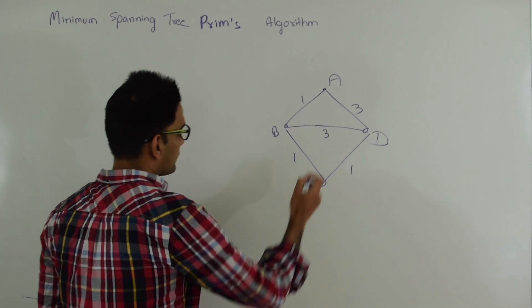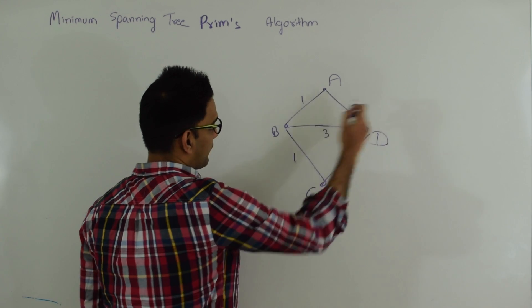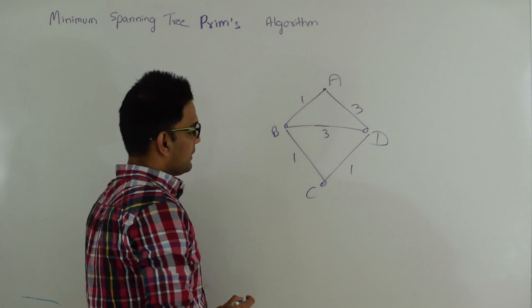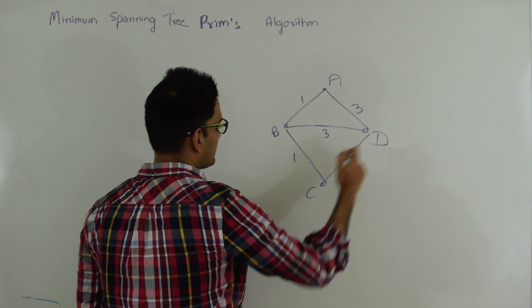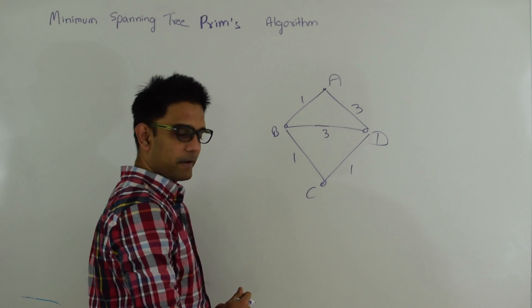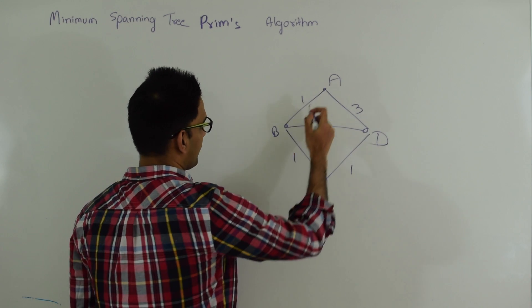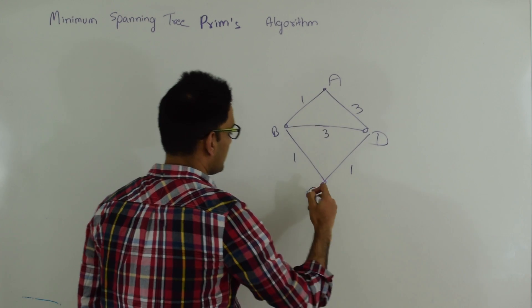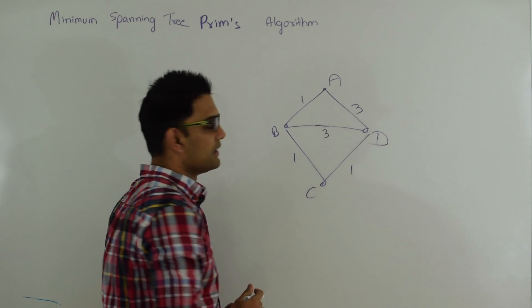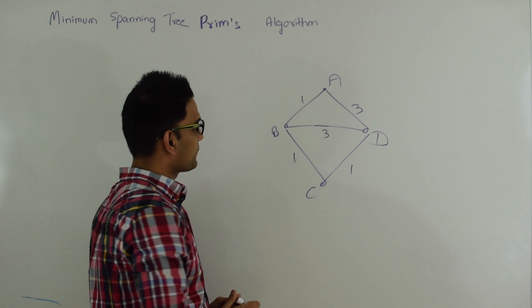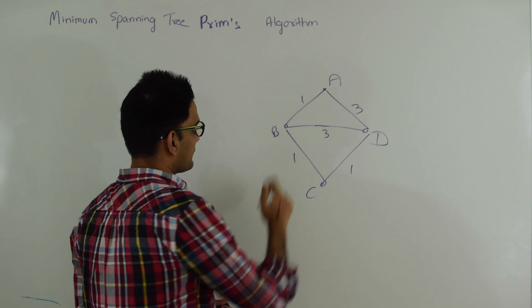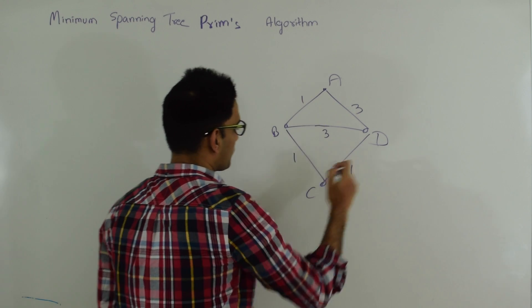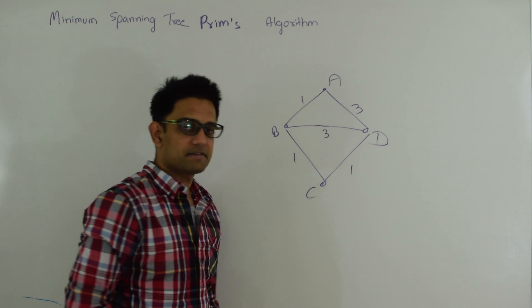So suppose we have this graph here. We have four vertices A, B, C, D. If we pick these three edges A-B, B-C, and C-D, we get a minimum spanning tree and the sum of their weights is 1 plus 1 plus 1, that is 3.